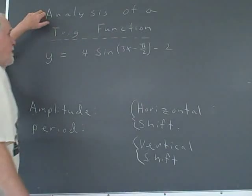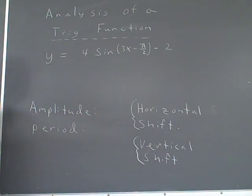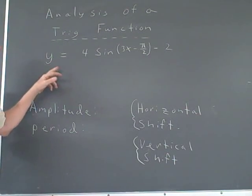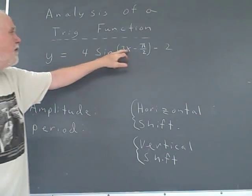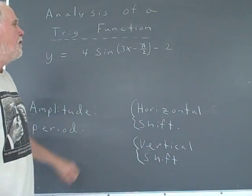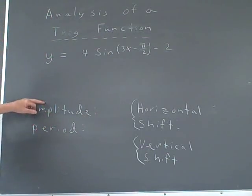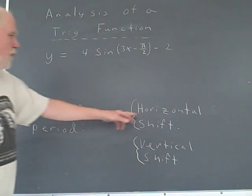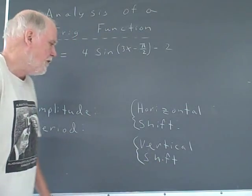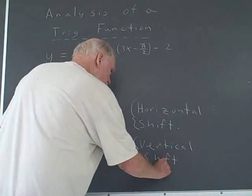We're going to do an analysis of a rather complicated trig function, y equals 4 sine of 3x minus pi over 2 minus 2. And we're going to determine the amplitude, the period, the horizontal shift, and the vertical shift. That's what we want to do here.